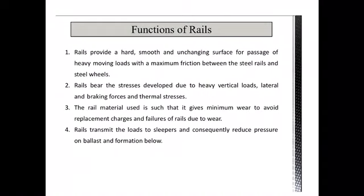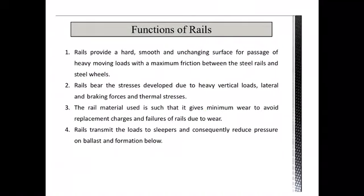The functions of the rail section include: providing a hard, smooth, and unchanging surface for heavy moving loads with maximum friction between steel rails and steel wheels. The rail must have sufficient strength to handle stresses from heavy axle loads, lateral braking forces, and thermal expansion due to temperature changes. The material must give minimum wear to avoid frequent replacement, and must have the capability to transfer loads to the sleepers, consequently reducing pressure on the ballast and formation below.